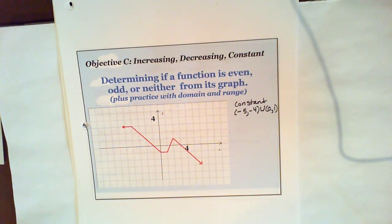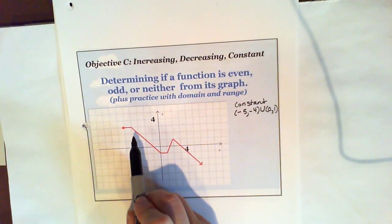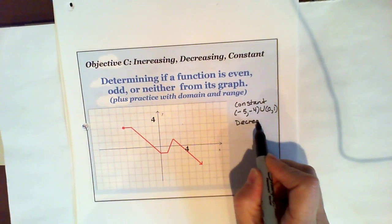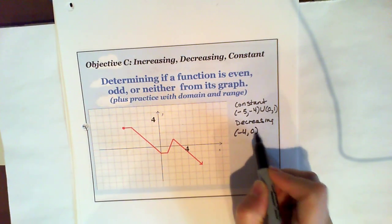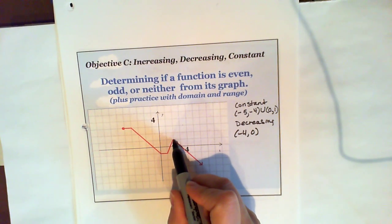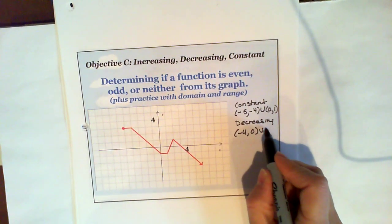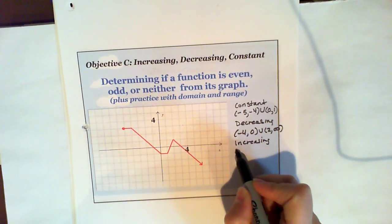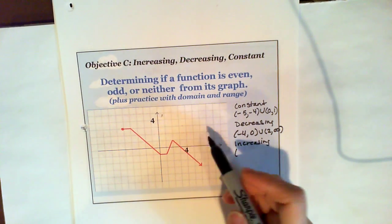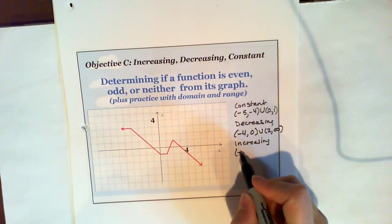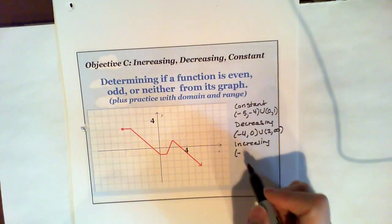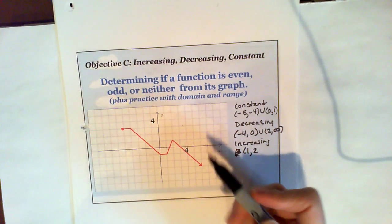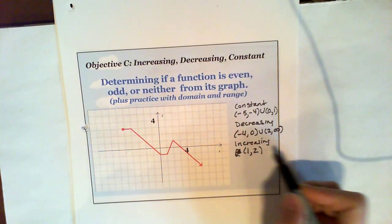My screen went away, but I guess I'm still recording. So then I can also do decreasing — from negative four, it decreases down to zero: negative four to zero. And it also decreases here, so I would say from x is one to x is two — there's an arrow, it keeps on going — so I'm going to union two to infinity where it's decreasing. Increasing: we'd go from negative one to one. The x value is one and the x value is two, even though the y values go from negative one to one. So my x values — that's where it's increasing.